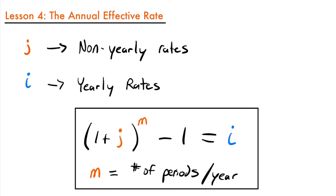That's where we come to this equation: our converter that allows us to go from a rate that is not yearly to one that is yearly. We have (1 + J) to the M power, where M is the number of periods per year, and then we subtract one to get our interest rate I — the annual effective rate, representing how much we earn every year.